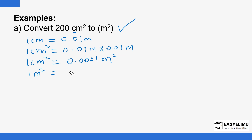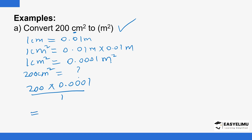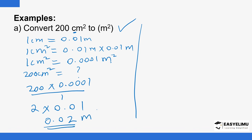So now with 200 square centimeters, we want to find how many square meters that is. We multiply 200 by 0.0001 and divide by 1. The two zeros move the decimal point two places to the right, giving us 0.02 square meters. In other words, we multiply 2 by 1 and count the decimal places: zero in the first number and four in the second, giving 0.02 square meters.